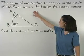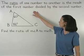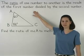The ratio of one number to another is the result of the first number divided by the second number.